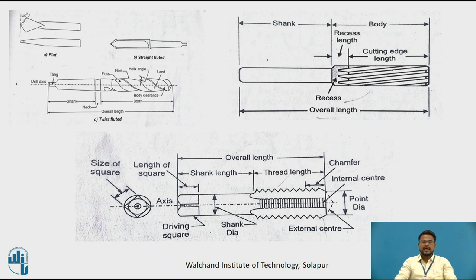Coming to taps. A tap is an internal thread cutting tool. It has a screw surface with the shape of the thread similar to that of the thread to be cut. It generally has four straight flutes across the threads. Taps are generally made of high speed steel or high carbon steel. Two types of taps are in use: hand tap and machine tap.